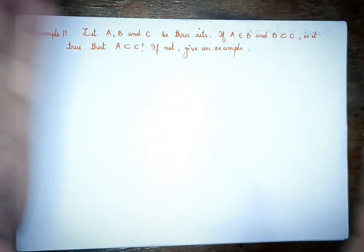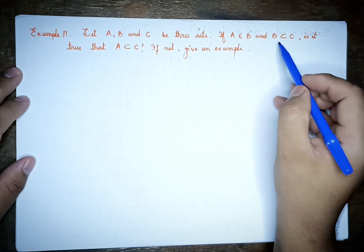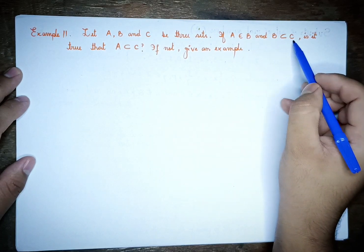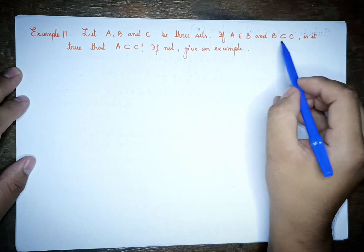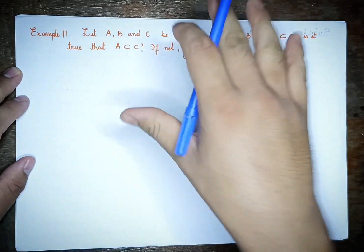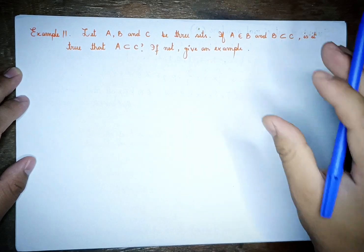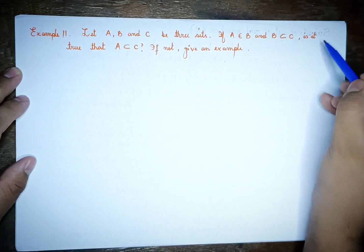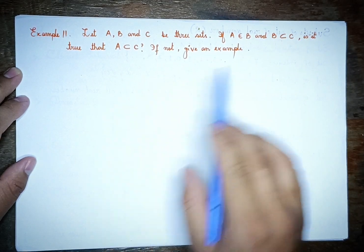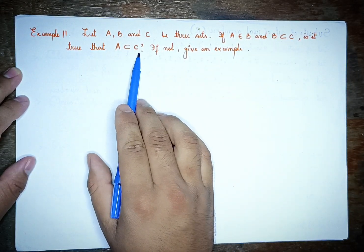B is a subset of C. A is a subset of B is a subset of C. Is it true that A is a subset of C?